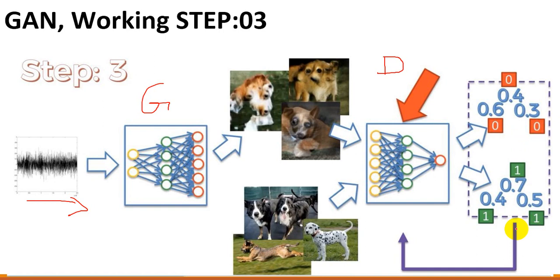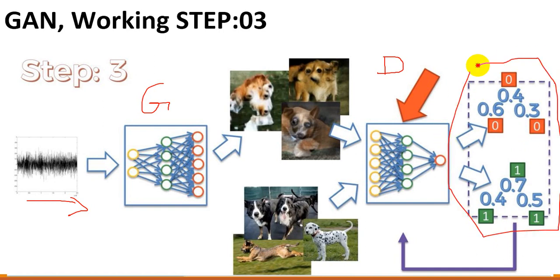They generate images in a better approach, and the probability of the real images — this is the whole process where we have a probability, and this whole process represents our GAN network.